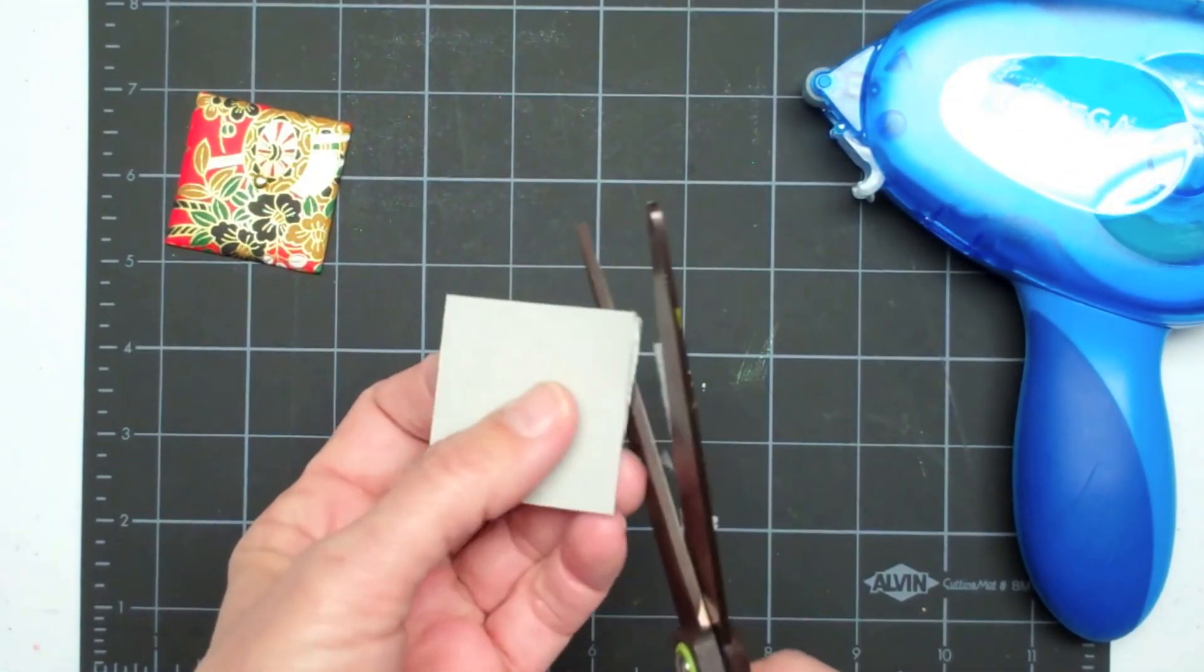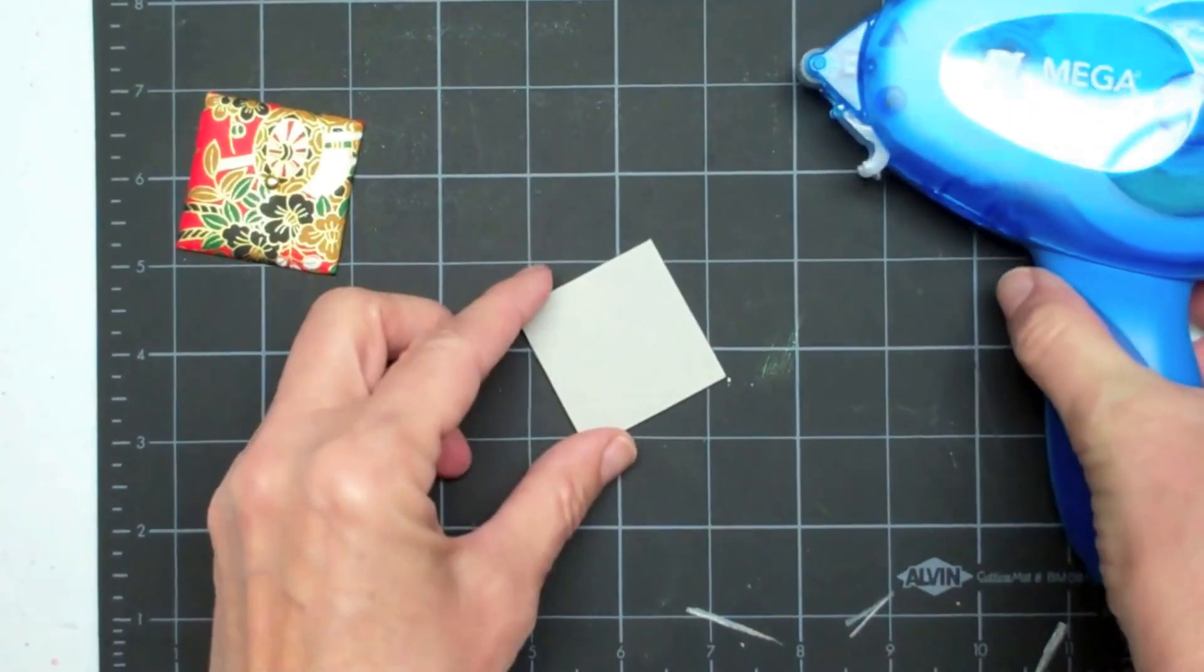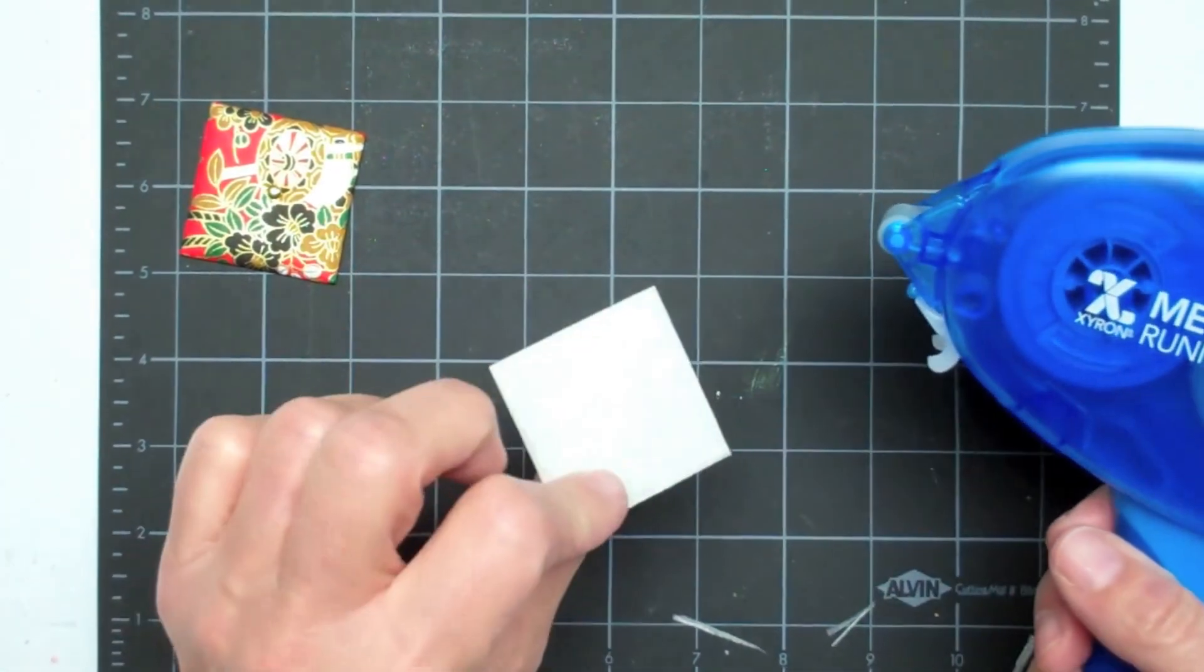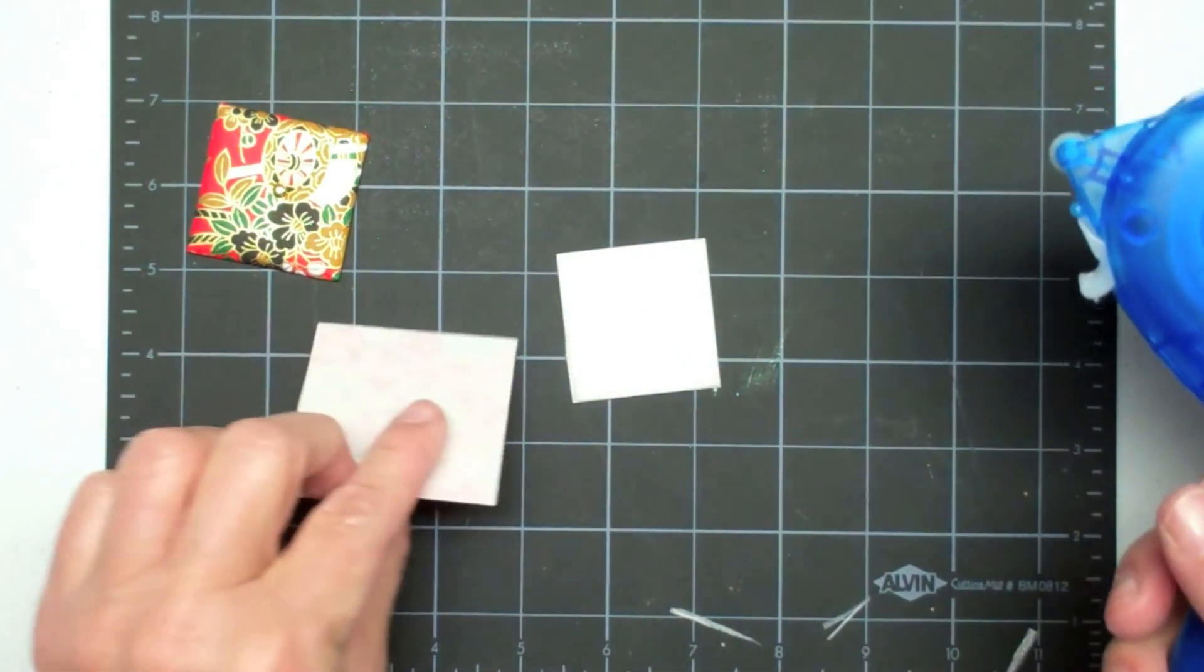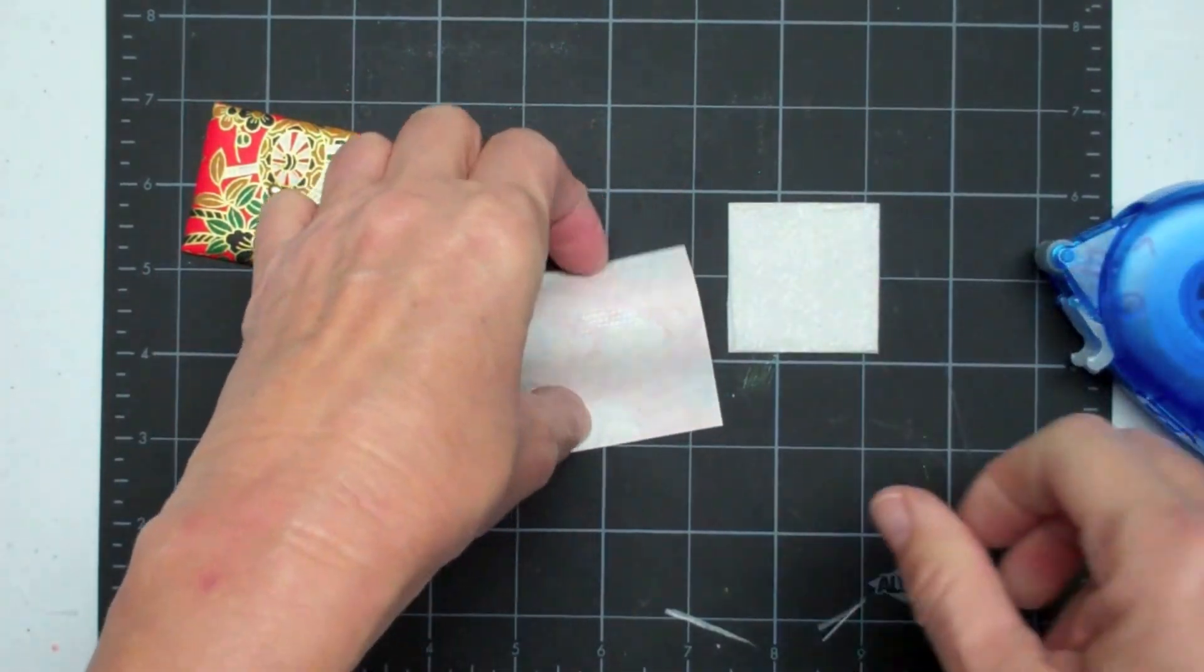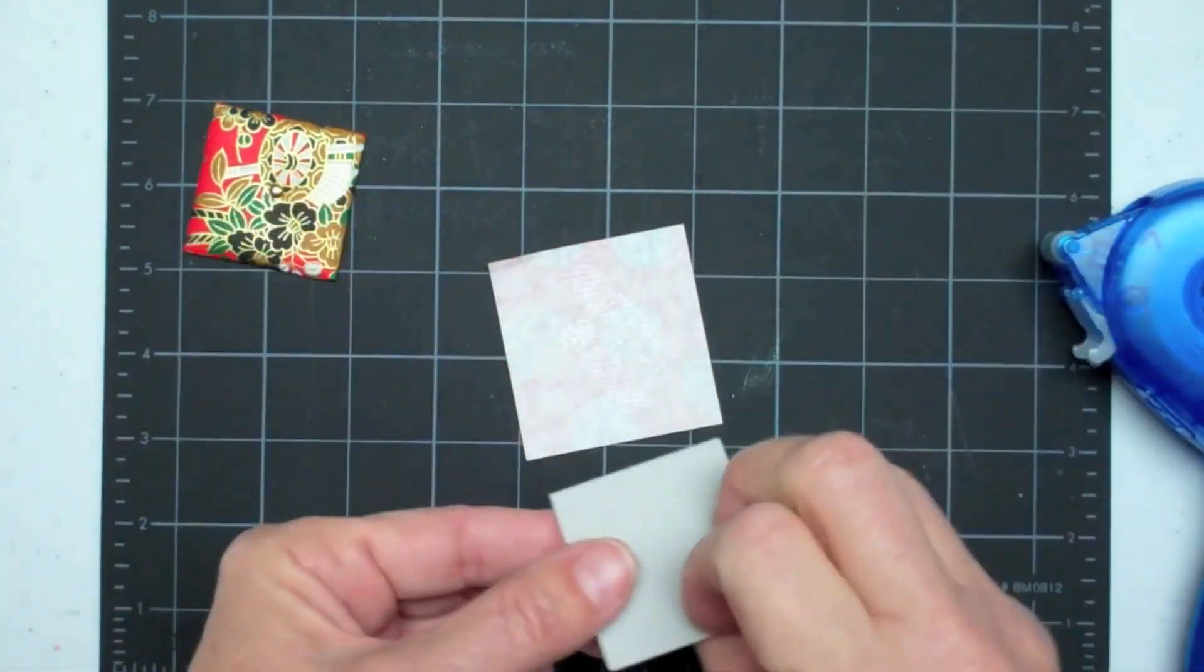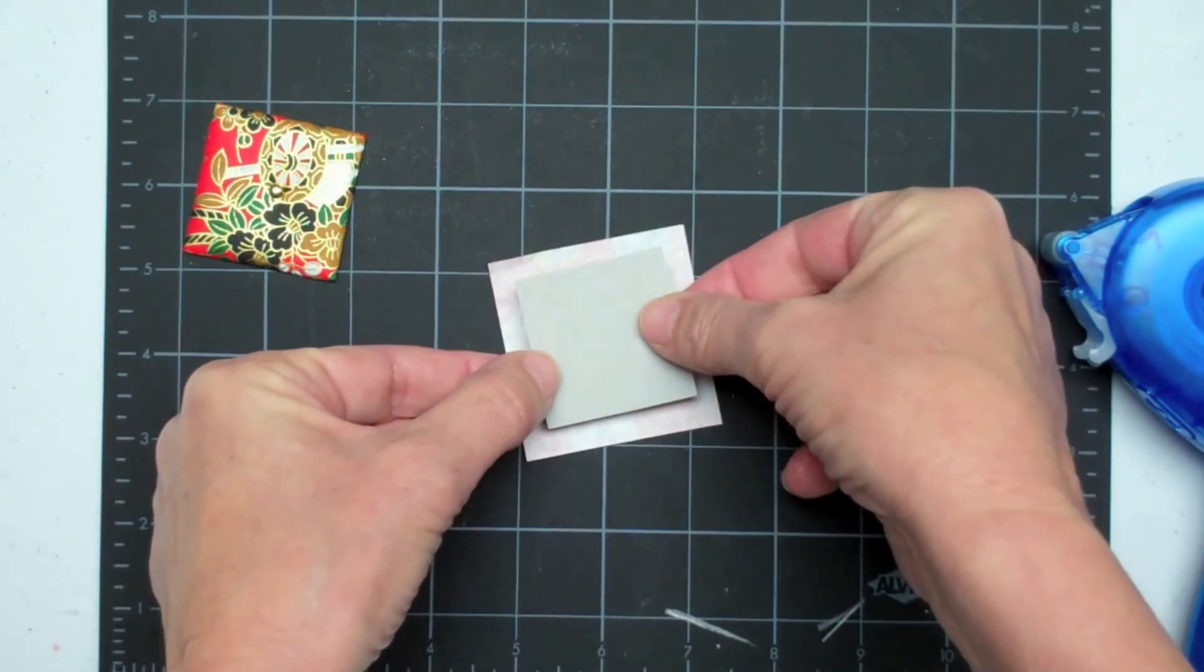I'm just going to trim a little bit if there's extra foam, just trim around the edges. I've got this nice padded little pillow thing here. I'm going to take the back of my paper and put strips of adhesive on that.